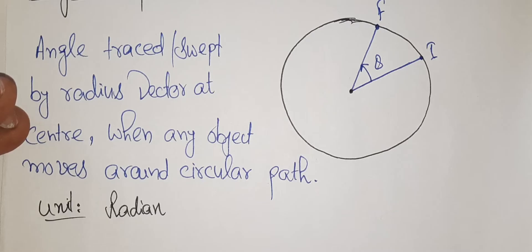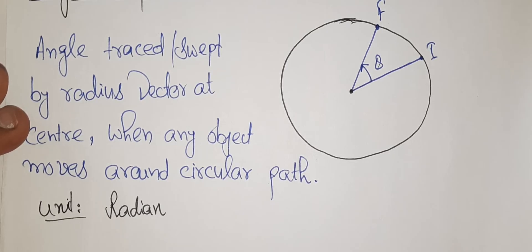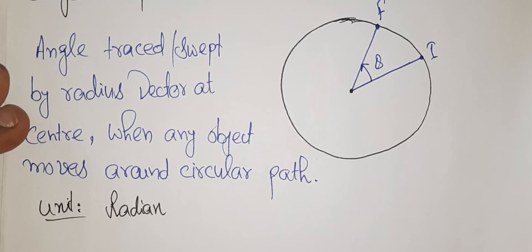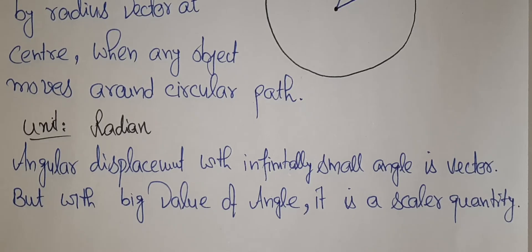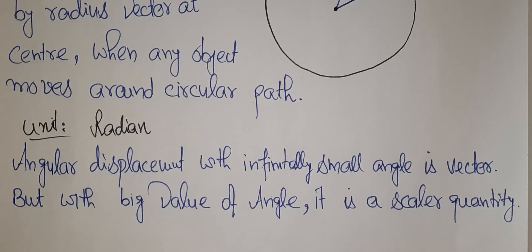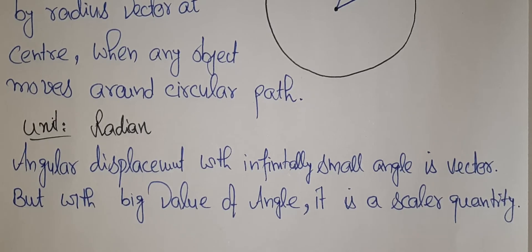When the angular displacement is very small — infinitely small — it is a vector quantity. But when we are talking of a big angle, that angular displacement is not a vector quantity; it is scalar. So angular displacement is a vector when the angle is very small, but it is scalar when the angular displacement is large.